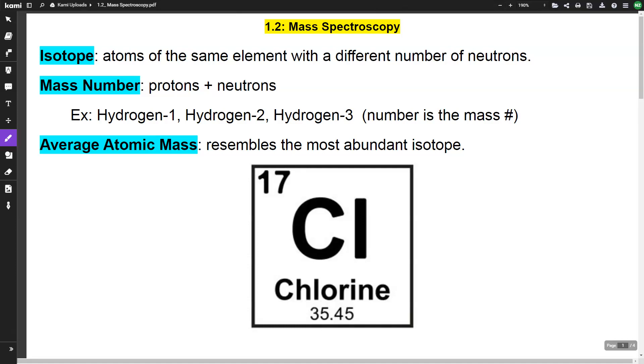Isotopes are atoms of the same element with a different number of neutrons. We can explain isotopes by talking about mass number. Mass number is the number of protons plus the number of neutrons. Protons and neutrons are the subatomic particles that have the most mass. Electrons have mass, but their mass is so small that it's really insignificant. The protons and neutrons are the two particles that really determine the overall mass of an atom.